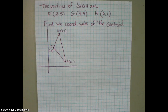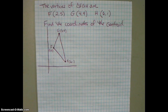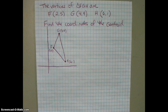Hola, class! We're going to do some coordinate geometry today. It's always best to do coordinate geometry problems on pencil and paper so you can really see all the work. So here we're given a triangle FGH, and the coordinates of each of the vertices, and we're asked to find the coordinates of the centroid.